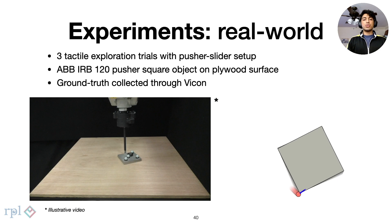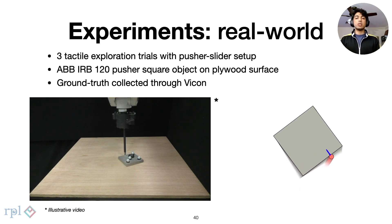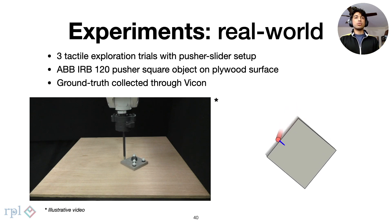In the real world, we use a single pusher to circumnavigate a square object. This is conducted on a plywood surface with Vicon tracking for ground truth.